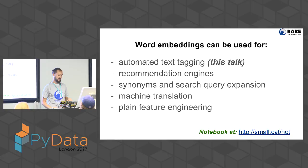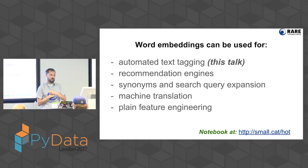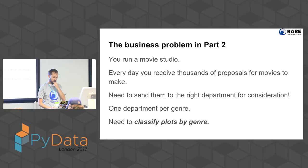Other uses for word embeddings: you can automatically tag text as we're going to do today — a movie plot comes in and the outcome will be a genre like romance, action, or drama. You can also use it for recommendation engines, and for search query expansion. This algorithm came from Google, which used it for expanding search queries — when you type something and it asks 'did you mean something else?' Word2Vec is one of the things working behind the scenes. Also machine translation and plain feature engineering.